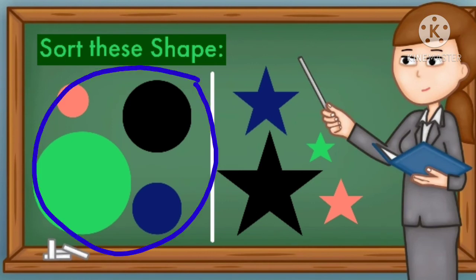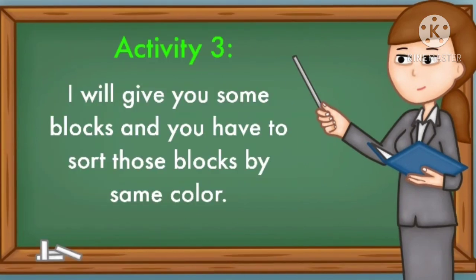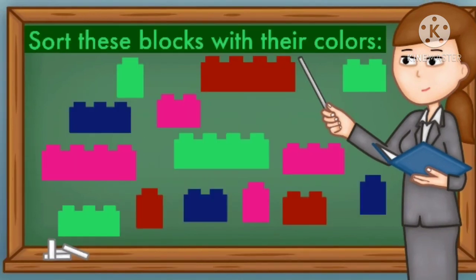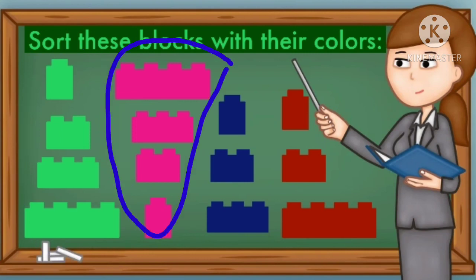All of these are circles and all of these are stars. Activity three: I will give you some blocks, and you have to sort those blocks by the same color. Here are some blocks with different size and color — sort these blocks by their color. Right! These are green blocks, these are pink blocks.